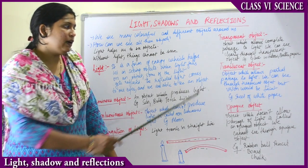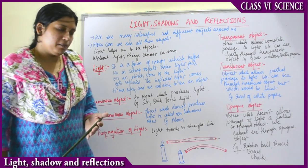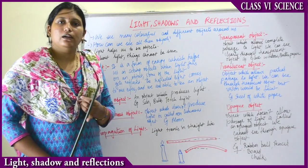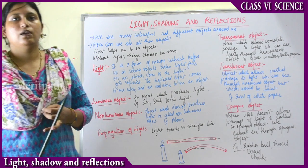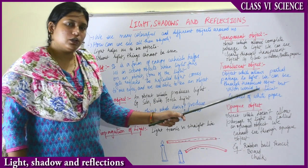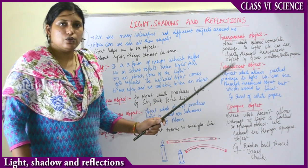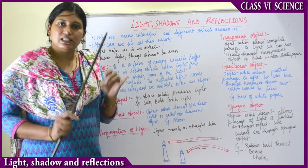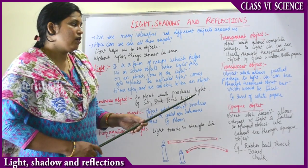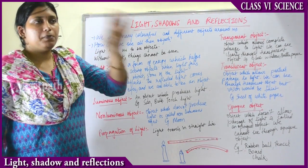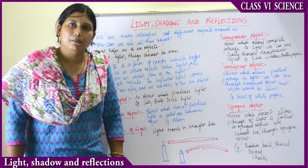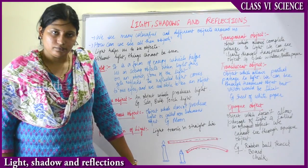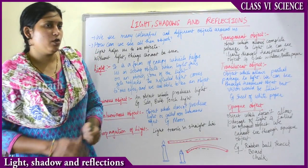Translucent objects allow only partial passage of light, so the image will not be very clear — we can see the image but not clearly. We can see through a translucent object but the vision will be faint, blurred. Suppose you take a sheet of white paper and try to see the light behind it — you can see the light but cannot see the exact shape of the bulb. Such objects that give a faint, blurred image are translucent objects.